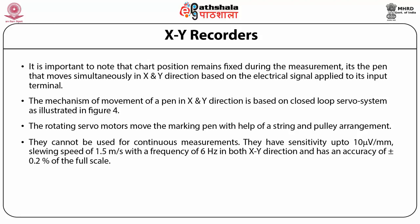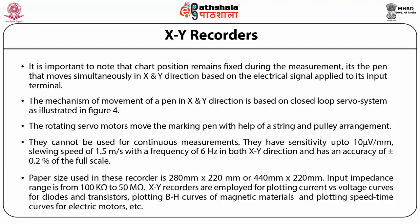XY recorders have a sensitivity up to 10 µV per mm, a slewing speed of 1.5 m/s with a frequency of 6 Hz in both x and y directions, and an accuracy of ±0.2% of full scale. Paper size used is 280 mm × 220 mm or 440 mm × 220 mm, and input impedance ranges from 100 kΩ to 50 MΩ. XY recorders are employed for plotting current versus voltage curves for diodes and transistors, plotting BH curves of magnetic materials, and plotting speed-time curves for electrical motors.